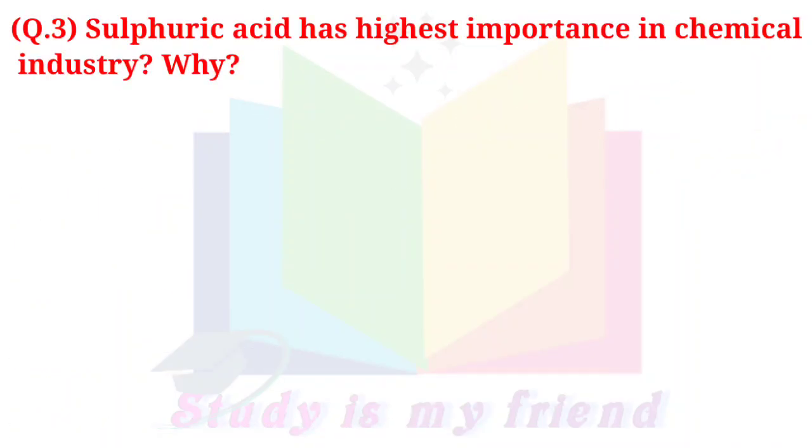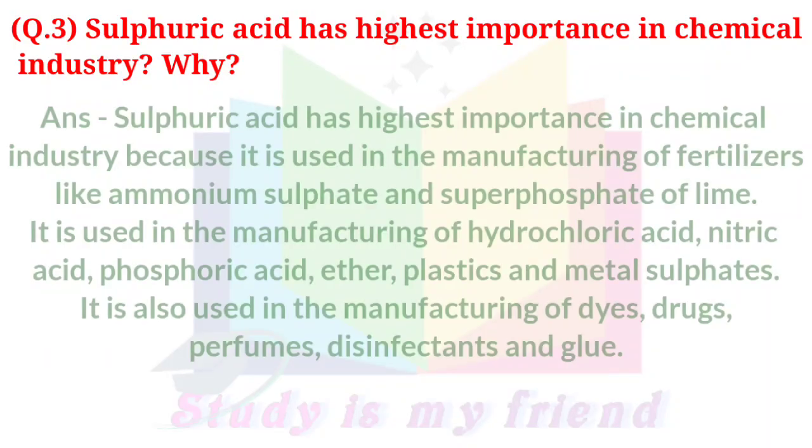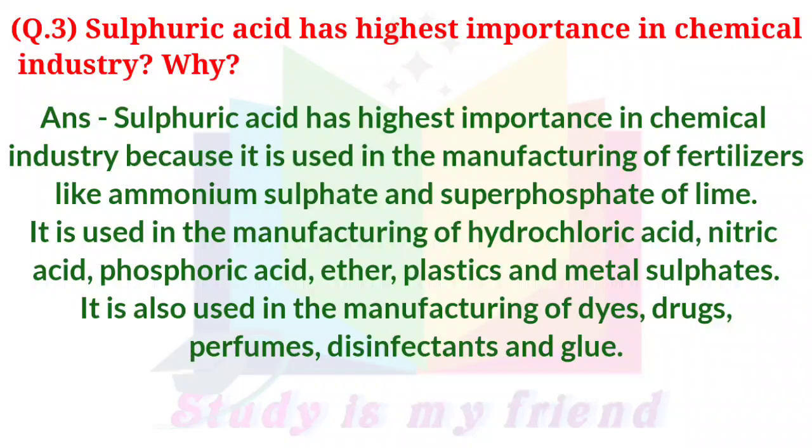Question 3: Sulphuric acid has highest importance in chemical industry. Why? Answer: Sulphuric acid has highest importance in chemical industry because it is used in the manufacturing of fertilizers like ammonium sulfate and supersulfate of lime. It is used in the manufacturing of hydrochloric acid, nitric acid, phosphoric acid, ether, plastic and metal sulfates.